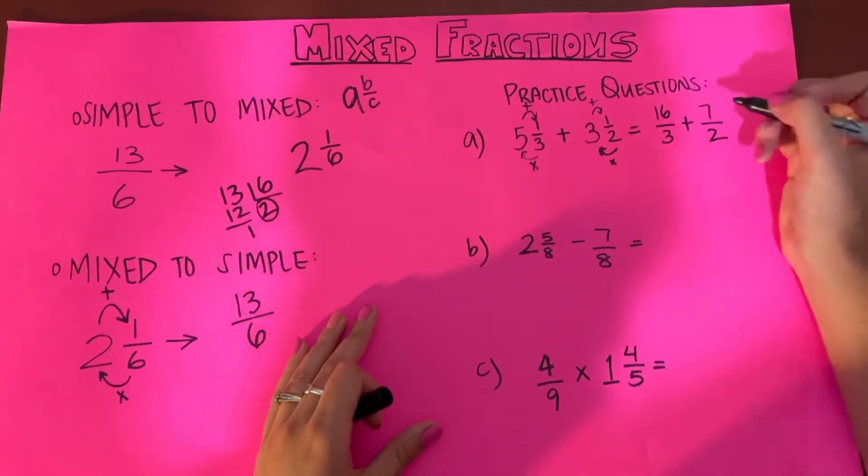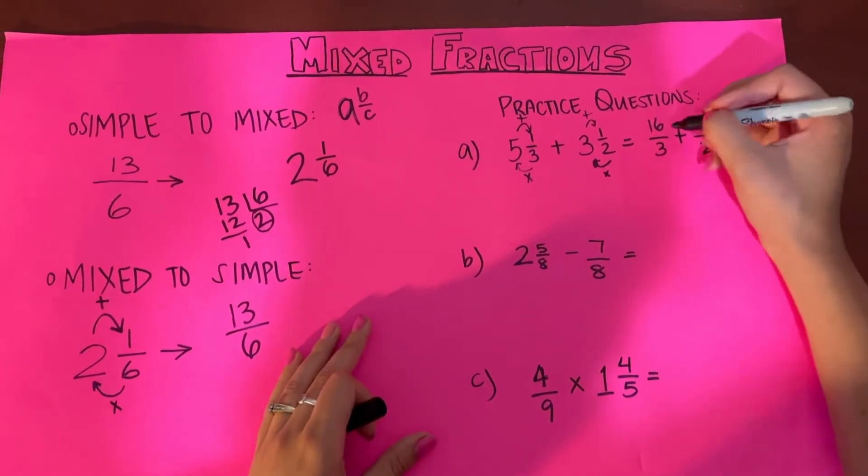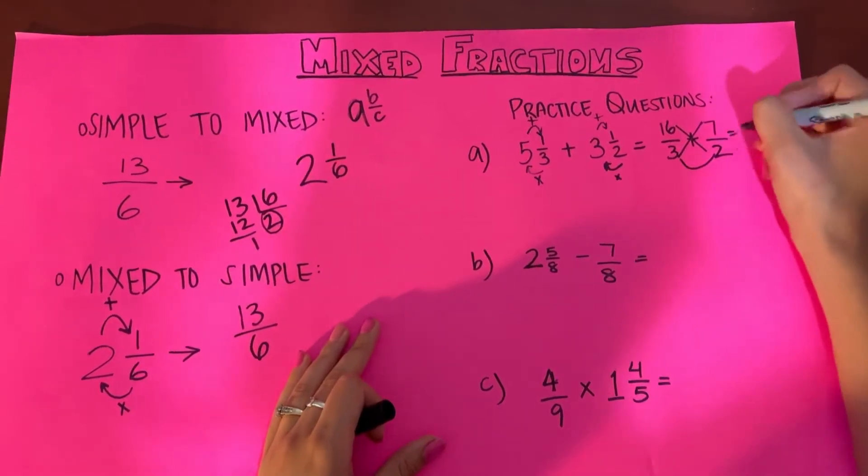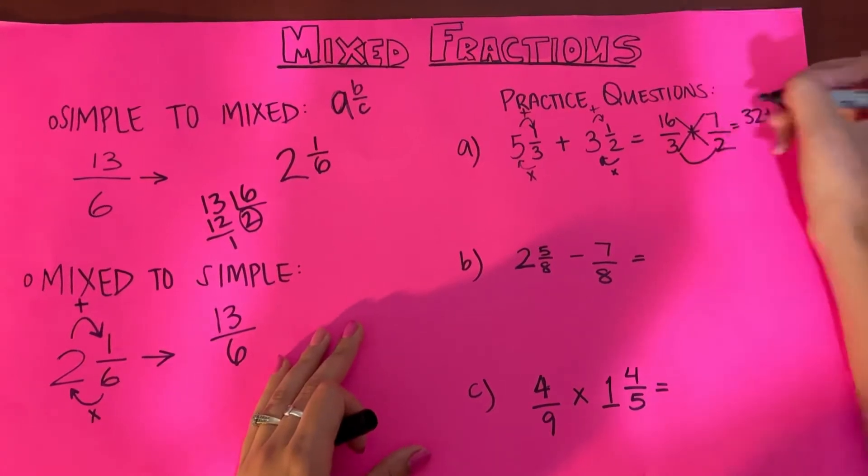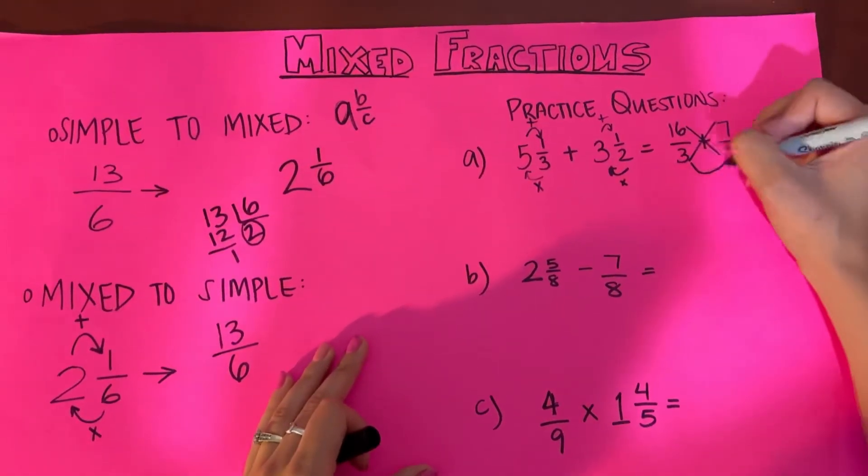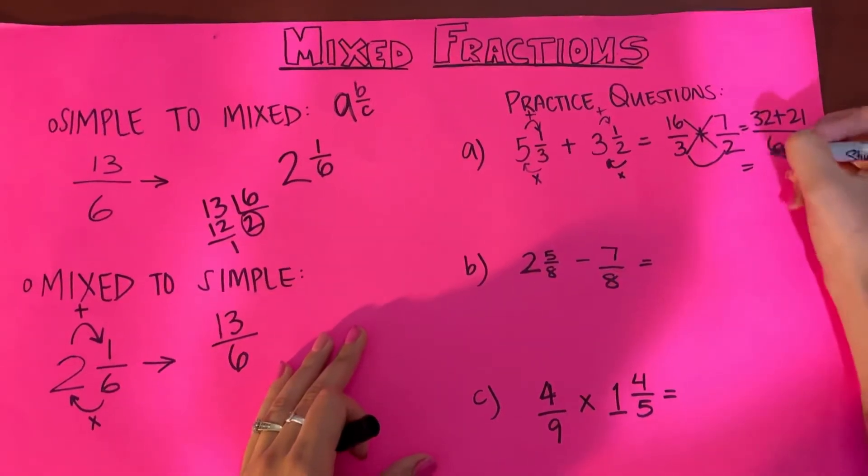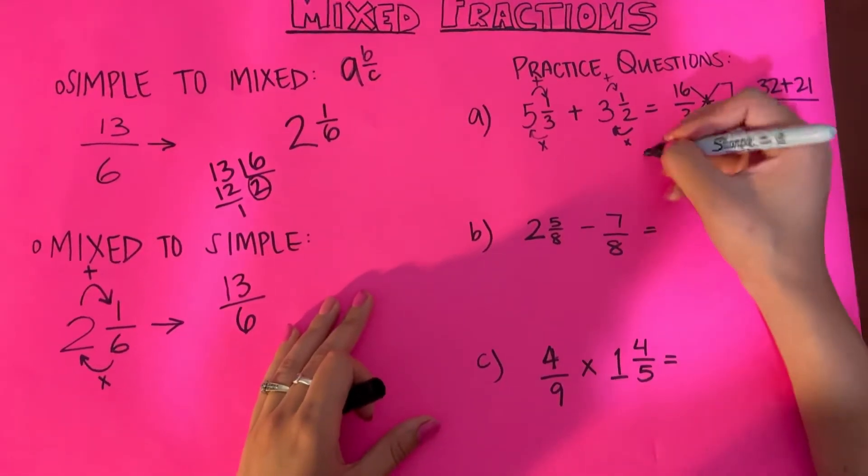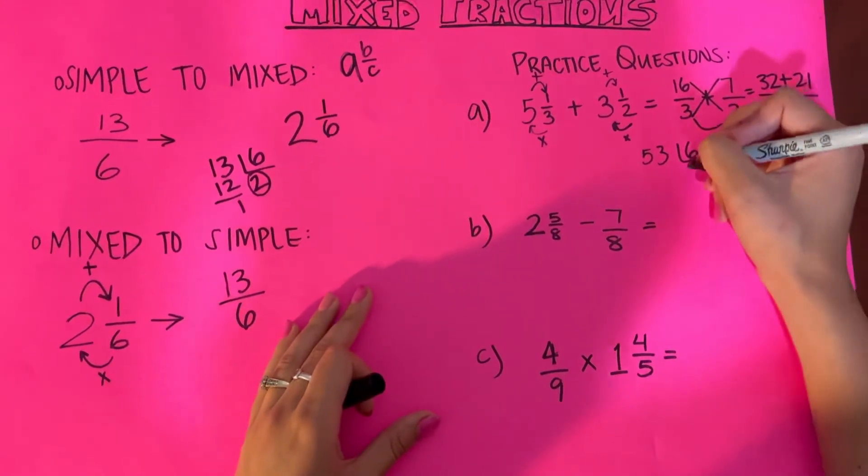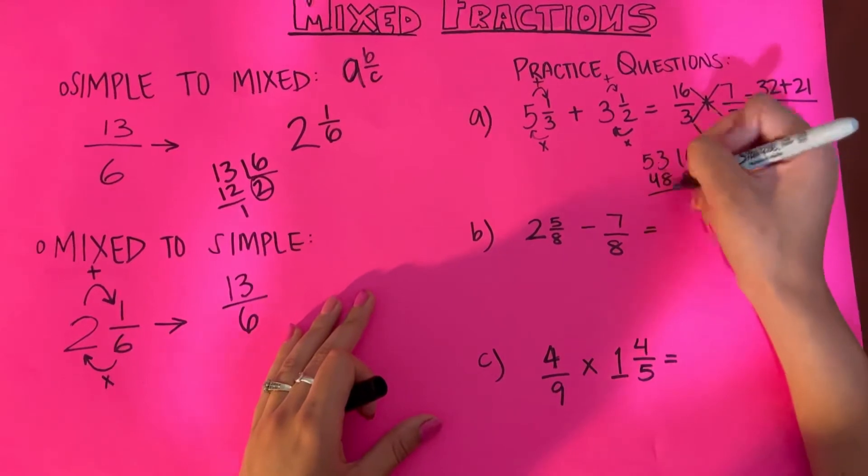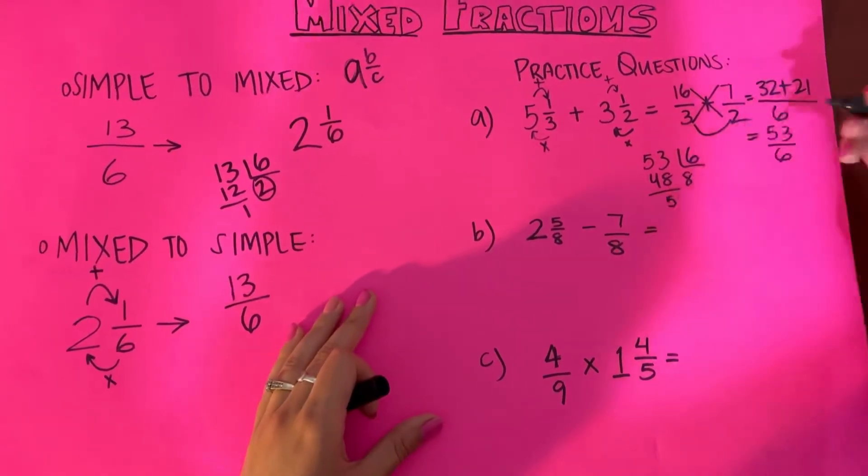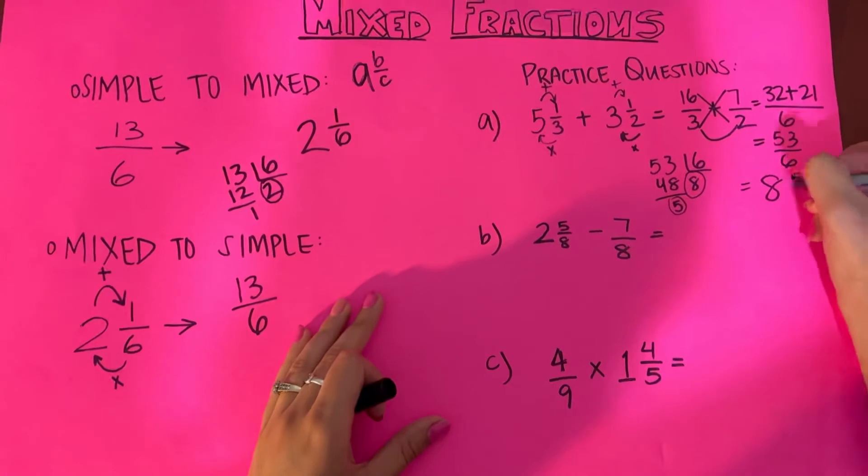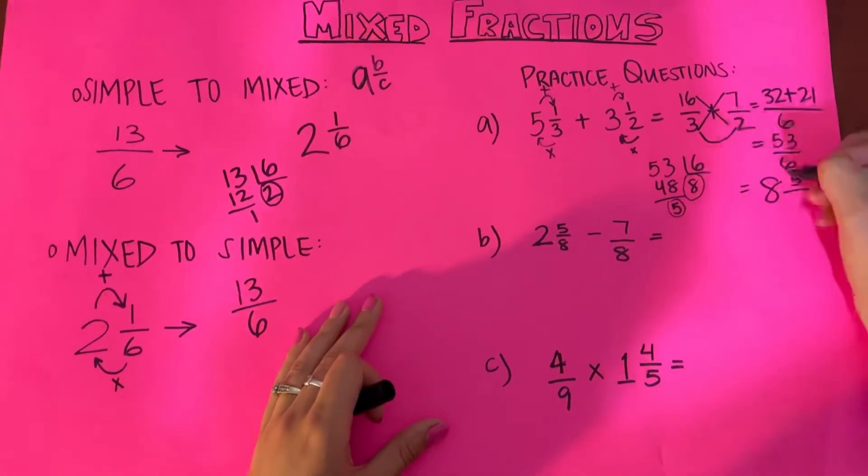Now to solve this, I have another video which explains all about fractions, but you use the butterfly method. So you multiply 16 by 2, which is 32, plus 3 multiplied by 7 will be 21. Then you multiply the denominators, which is 6. That would be 53 divided by 6. To convert this into a mixed fraction, you would do 53 divided by 6. So 6 multiplied by 8, 48. 53 minus 48 will be 5. So again, this one is the main one, so it goes as big as possible, and then the residue goes on the numerator and the same denominator.